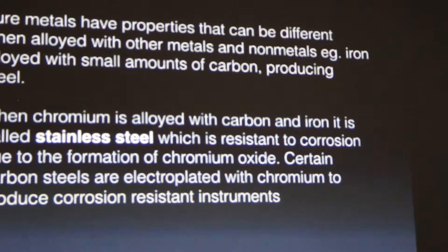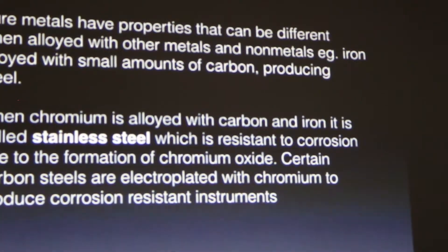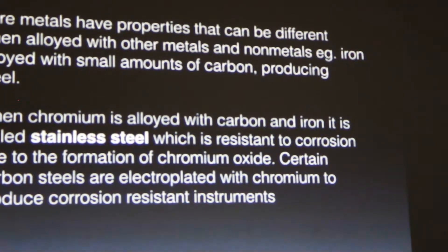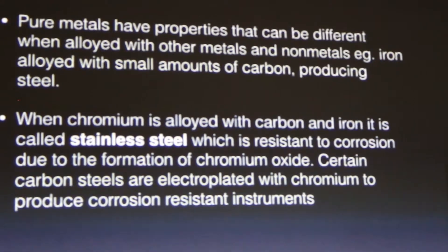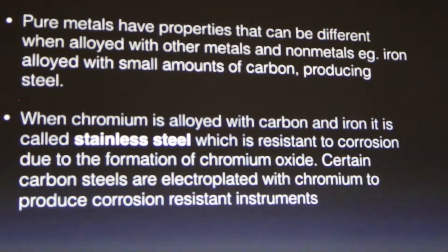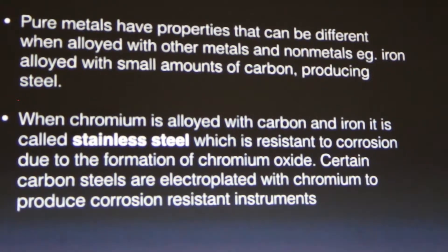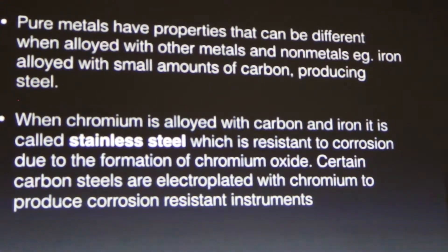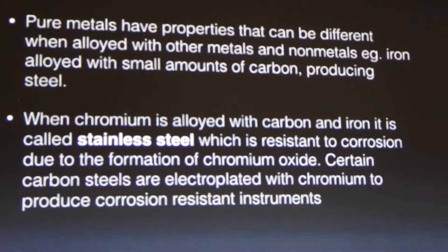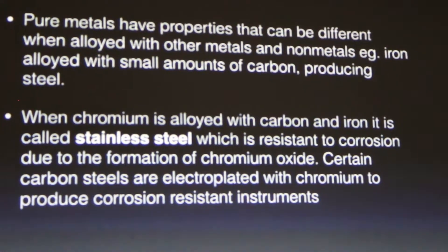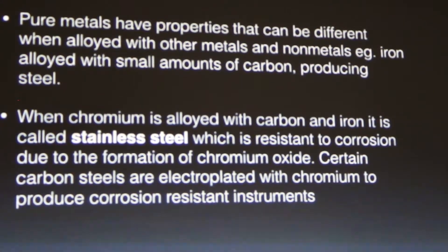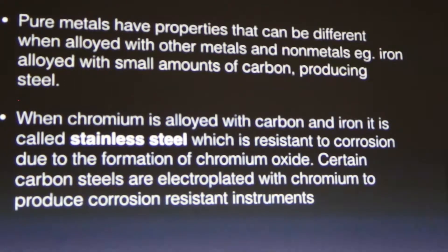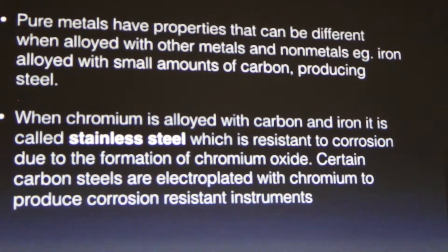The chromium forms a chromium oxide layer, which prevents the corrosion of steel. Certain carbon steels that are electroplated with chromium will also produce corrosion-resistant instruments.